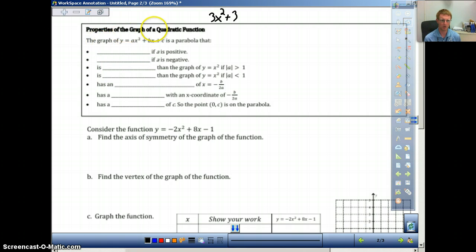Here are some of the properties of a quadratic function. We know that it's going to open up if our a is positive. We talked about that in the previous video. It's going to open down if a is negative.